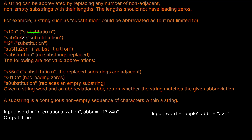Another example would be sub4u4 — so s, u, b, then four characters, then u, then four characters at the end. Or we could just have 12, where the entire length of substitution gets abbreviated as 12.